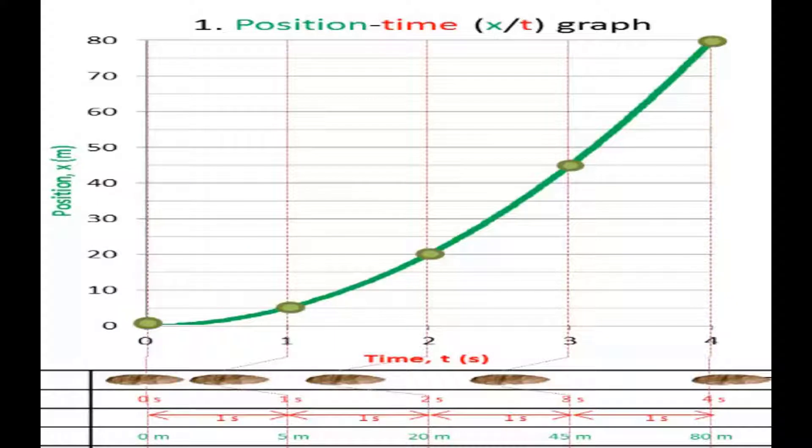This gives us a curved graph. That means that the gradient of the graph is changing all the time. The gradient starts shallow and becomes steeper and steeper.